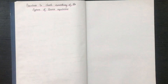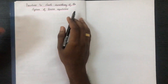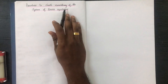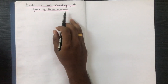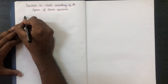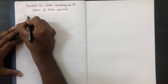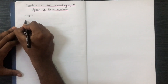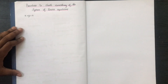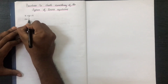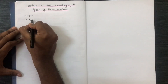We are going to find the procedure to check the consistency of a system of linear equations. We have a system of linear equations: x plus y is equal to 2, and 2x plus 2y is equal to 5.